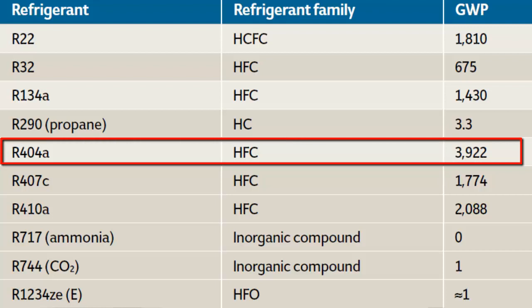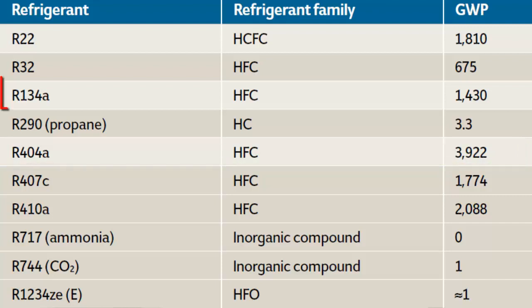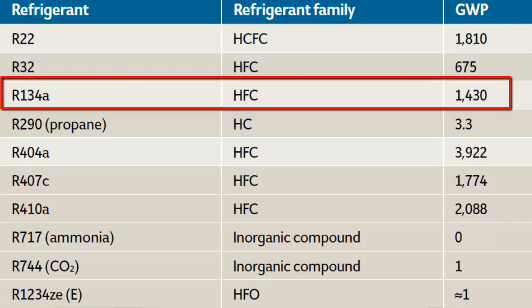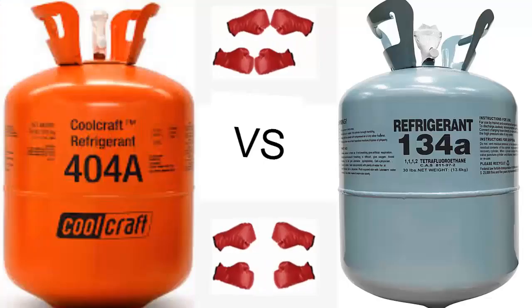However, perfection is not everything. R404A has a high global warming potential of 3922, meaning it has a greater impact on global warming. On the other hand, R134A has a GWP of 1430, making it a more environmentally friendly option.